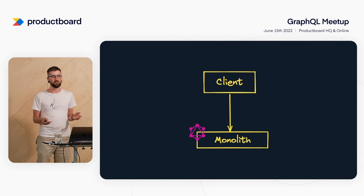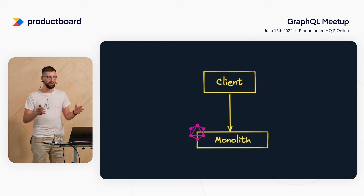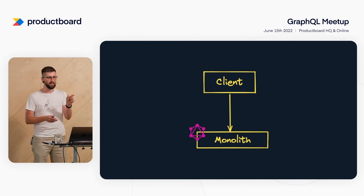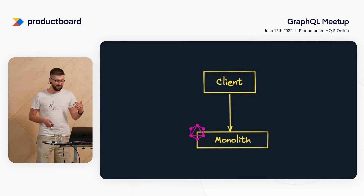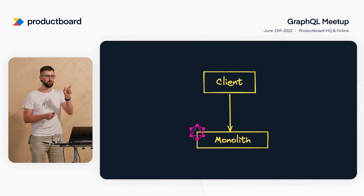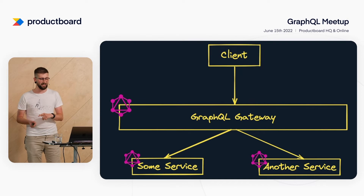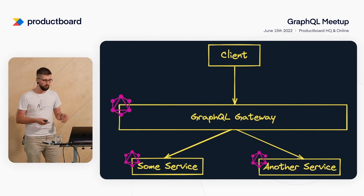We have a monolith, but there are microservices around it. We were thinking: are we going to create a monolithic GraphQL layer as a proxy, or what are we going to do? And that's exactly when federated GraphQL comes into play.